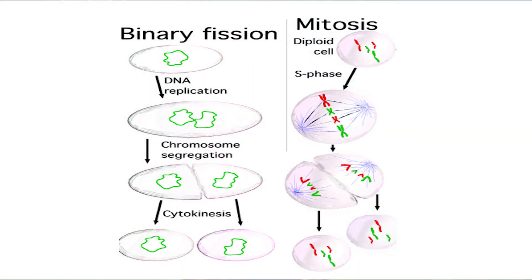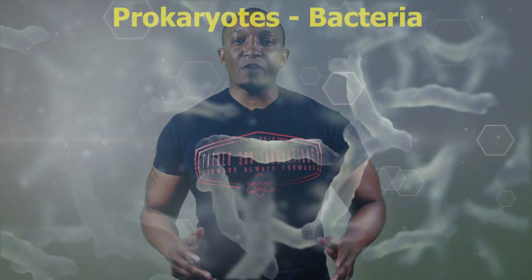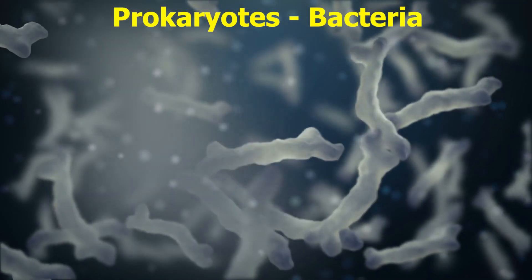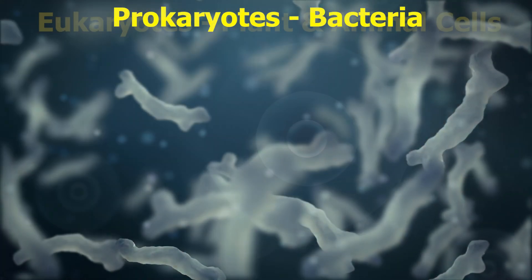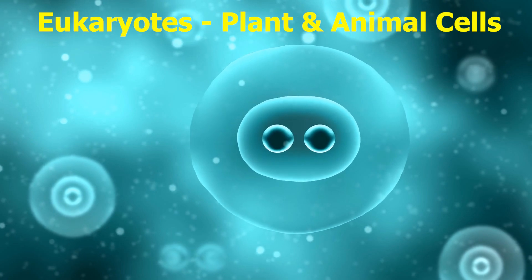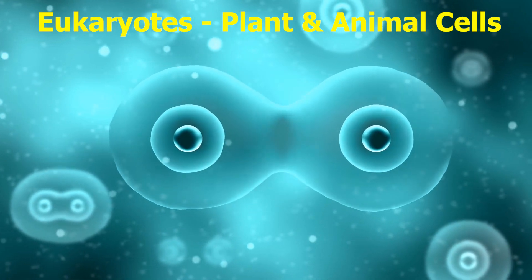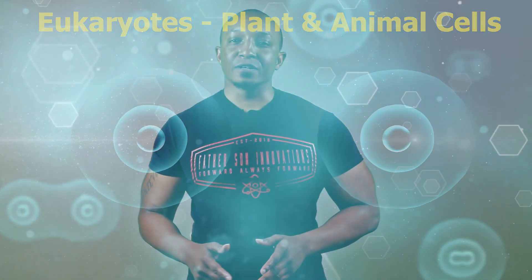First let's complete a quick review of asexual reproduction. Binary fission and mitosis are both forms of asexual reproduction in which a parent cell divides to form two genetically identical daughter cells. Binary fission occurs primarily in prokaryotes like bacteria, while mitosis only occurs in eukaryotes such as plant and animal cells. Binary fission requires fewer steps than mitosis and happens at a faster rate as a result.